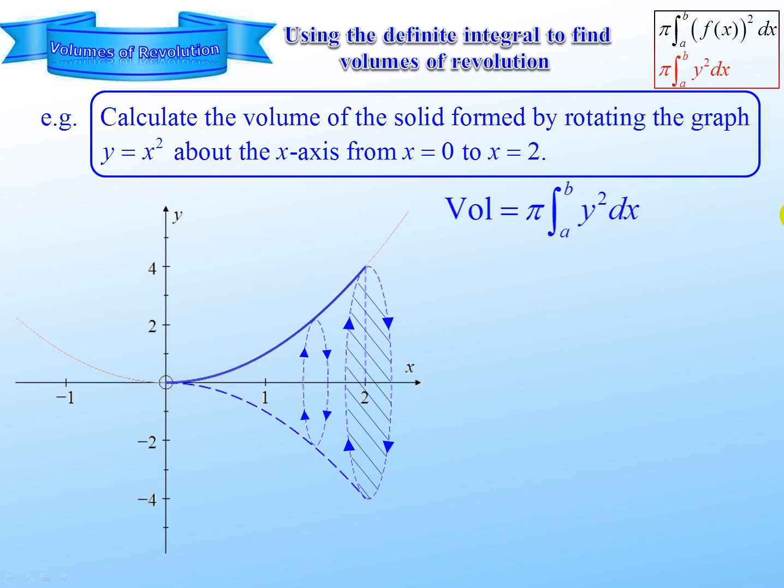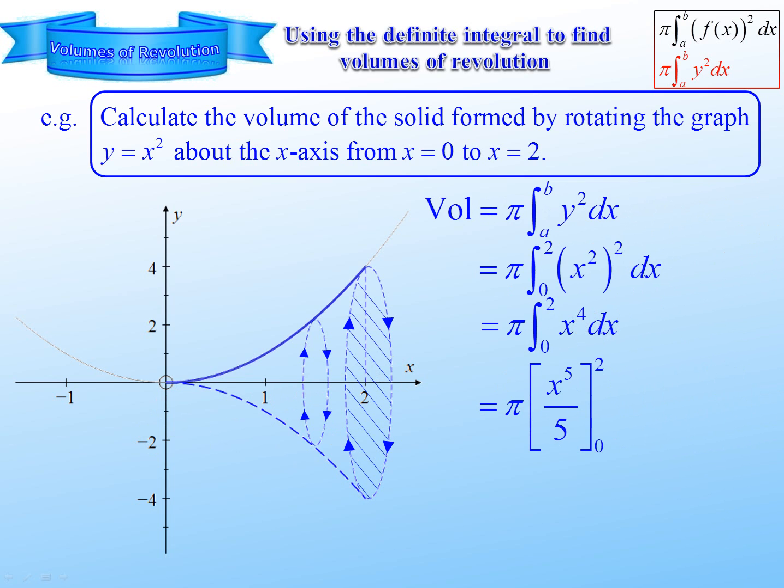So we are going to take the integral from 0 to 2 of y squared, so it's x squared squared dx, which gives me pi times the integral from 0 to 2 of x to the 4 dx. Standard integral becomes x to the 5 over 5.